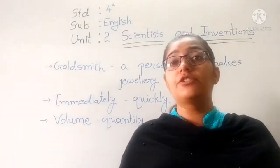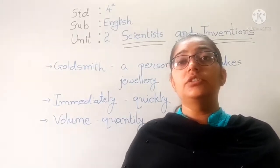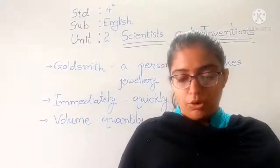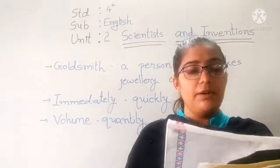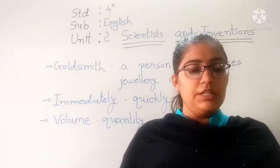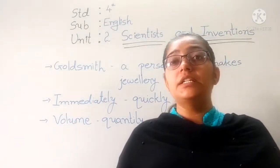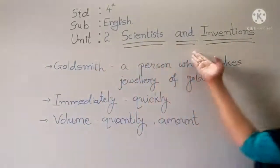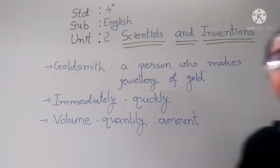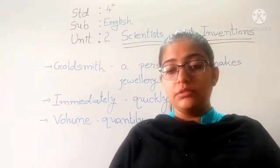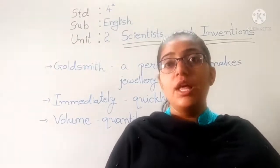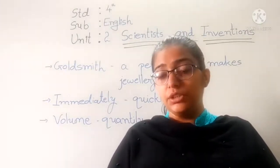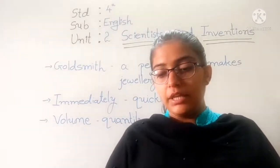Activity 3: Answer the following questions. In your English textbook, on page number 11, Activity 3 - Answer the following questions. Number 1: List the names of scientists. You can write: E.P.J. Abdul Kalam, Arya Bhatt, and C.V. Raman.